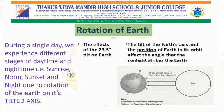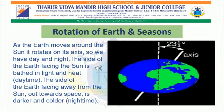Let us see how rotation affects the season. During a single day, we experience different stages of daytime and nighttime, i.e. sunrise, noon, sunset, and night, due to rotation of the Earth on its tilted axis. The tilt of the Earth's axis and the position of the Earth in its orbit affect the angle that sunlight strikes on the Earth. As the Earth moves around the Sun, it rotates on its axis, so we have day and night. The side of the Earth facing the Sun is bathed in light and heat, i.e. daytime. The side facing away from the Sun, out towards space, is darker and colder and it faces nighttime.